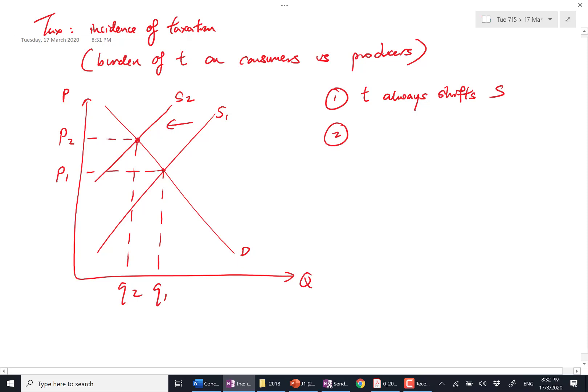The tax always ends up shifting your supply curve. Second, vertical distance between the supply curves represents the size of your tax. So if I tax even more, then the curve will shift up to a large extent.